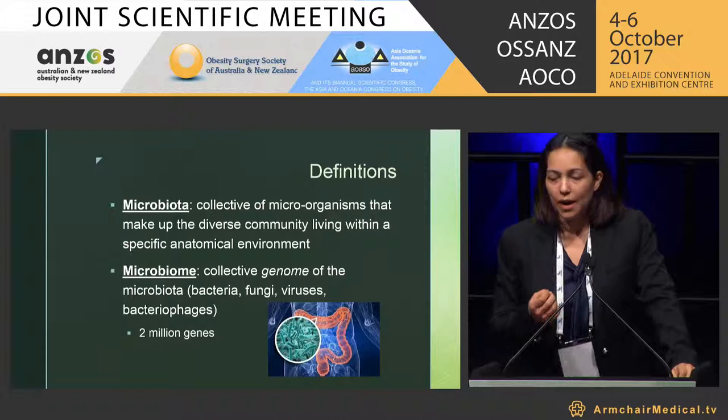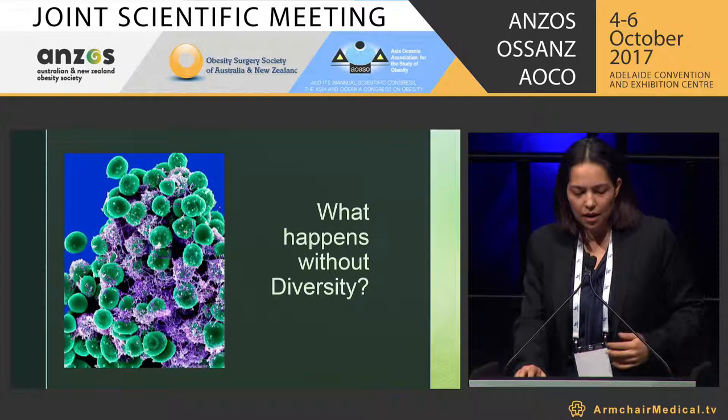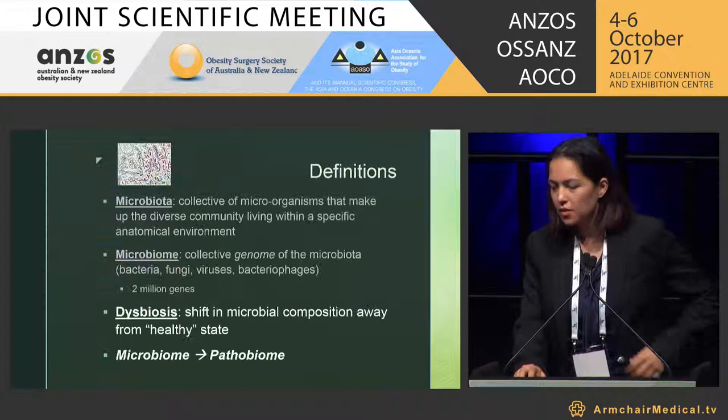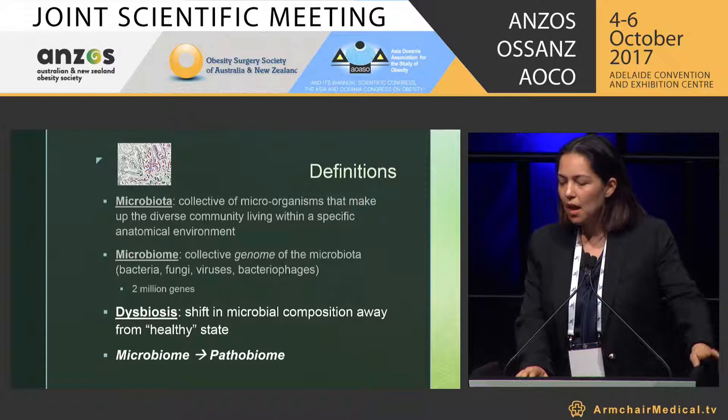The microbiome is the collective genome — all of the genes and the DNA that make it up — of the microbiota: the bacteria, fungi, viruses, and the bacteriophages. Diversity is good; that much we know. But what happens without diversity? A state called dysbiosis — a shift in the microbial composition away from the so-called healthy state — and that leads to the pathobiome.